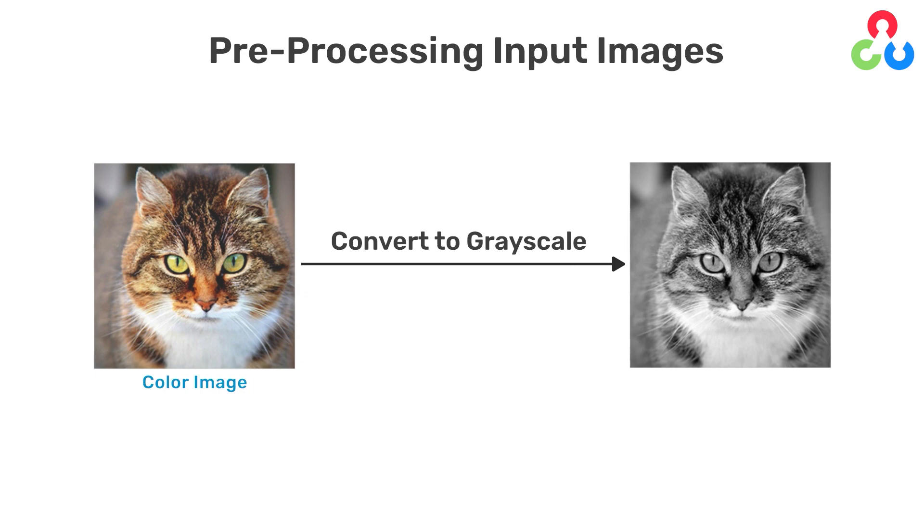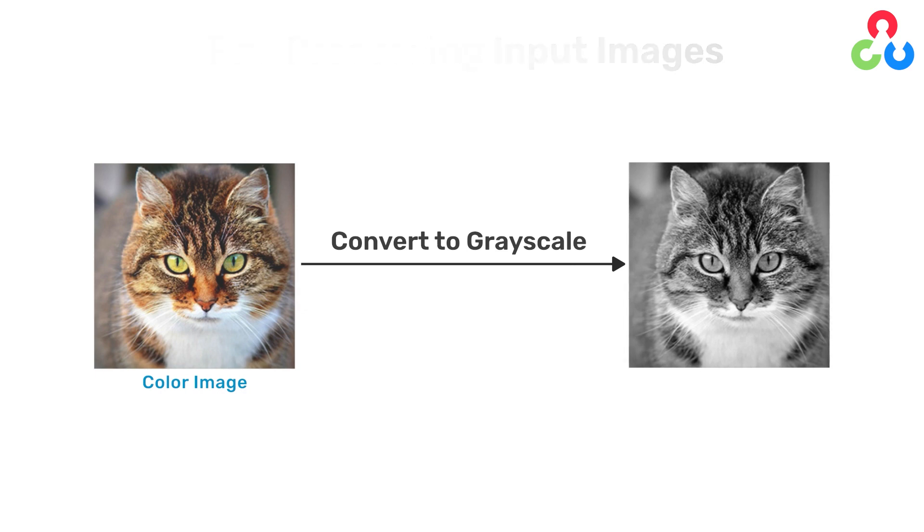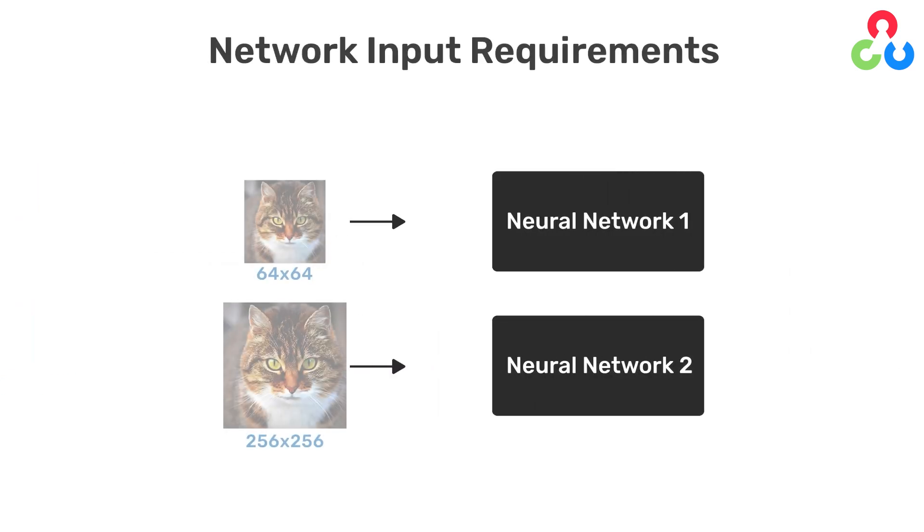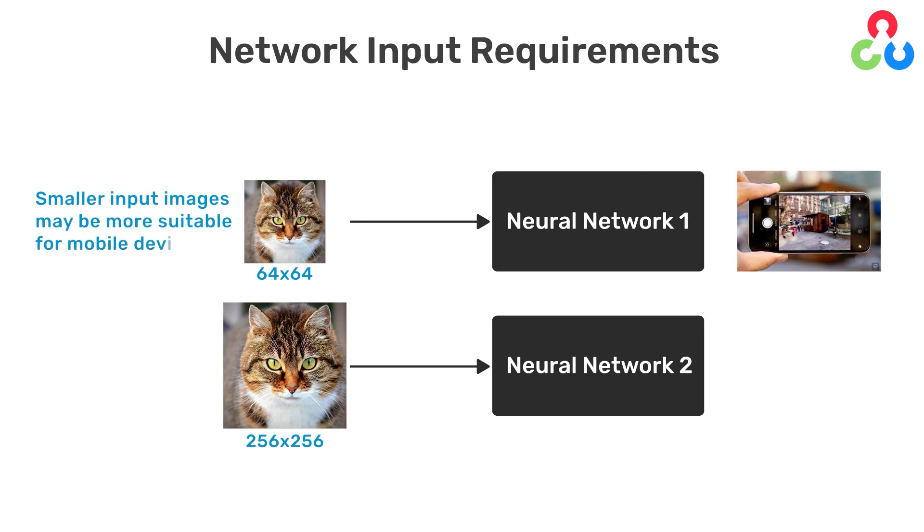Again, the main thing to note here is that when neural networks are designed, they're done so as to accept a certain size and shape for the input. In fact, it's not uncommon for different image classification networks to require different size inputs, depending on the application they're designed to support. For example, networks that are designed for mobile devices typically require smaller input images due to the limited resources that are associated with mobile devices. But that's okay, because all we need to do is preprocess our images to conform to the size and shape required by any particular network.